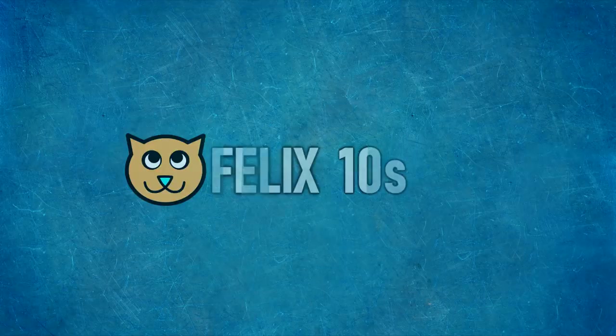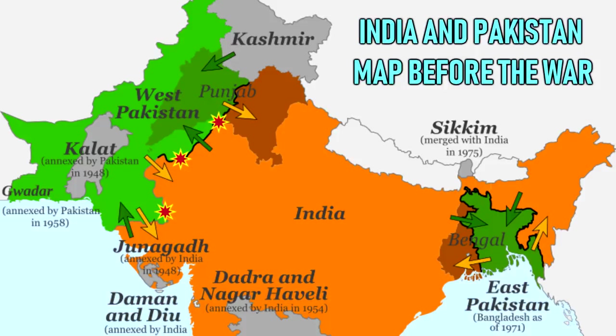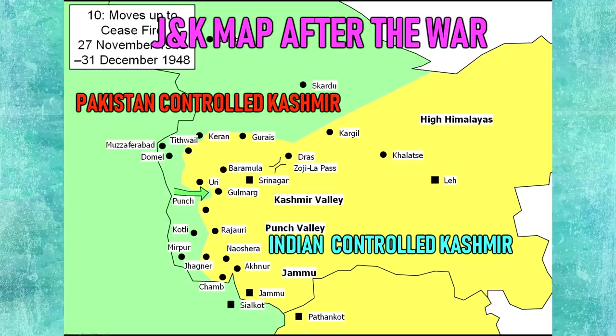Number six: the Indo-Pakistani War of 1947 to 1948. The Indo-Pakistani War was fought between India and Pakistan over the princely state of Jammu and Kashmir from 1947 to 1948. The result of the war was inconclusive; however, most neutral assessments agree that India was the victor of the war.